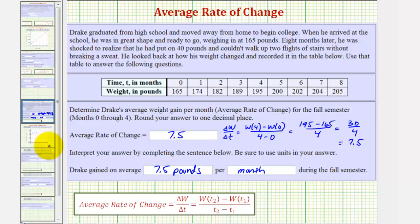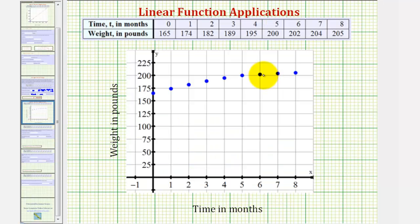If we go back to the graph for a moment, the average rate of change would be the slope of the line passing through the point when t equals zero and t equals four — or the slope of this line here.